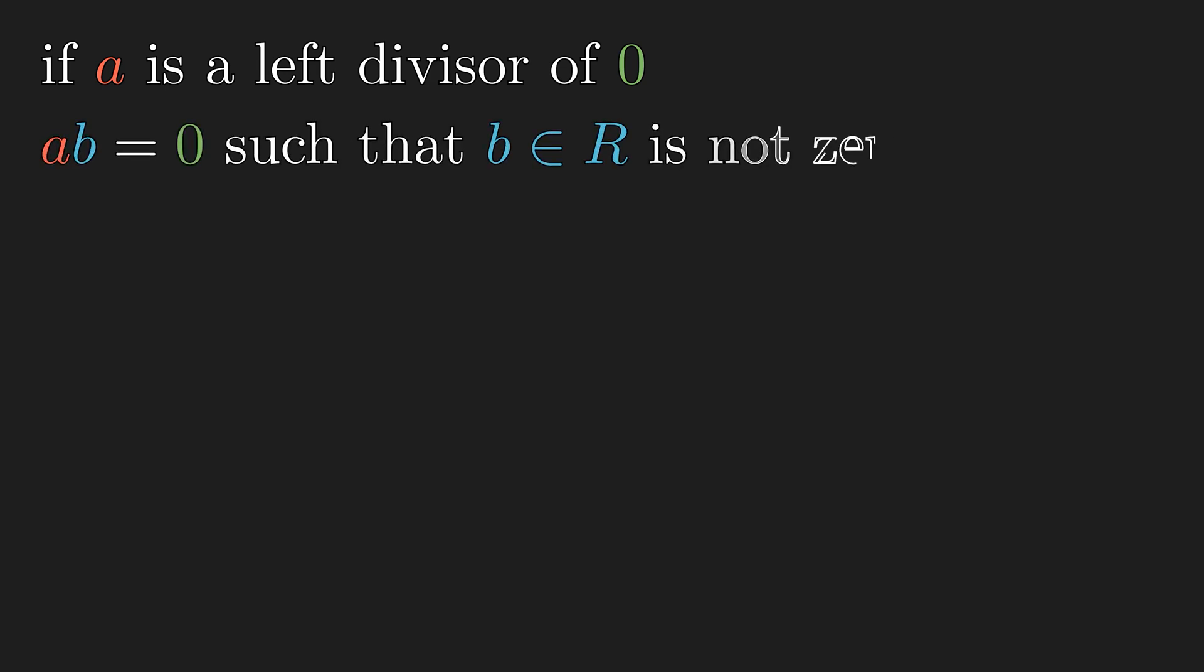Next, we will look at divisors of 0. Well obviously, every element of the ring are divisors of 0, since anything times 0 is equal to 0. So we have to come up with something more interesting. We say if A is a left divisor of 0, such that B is not equal to 0, then we say A is a left 0 divisor.